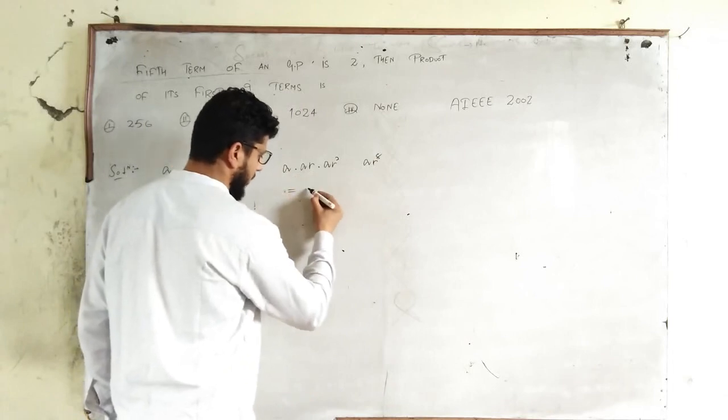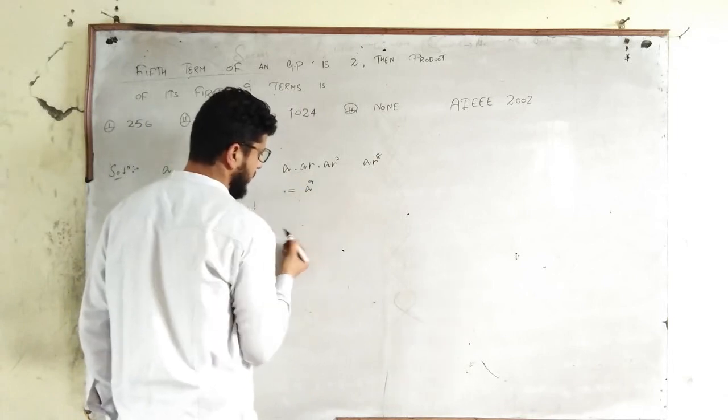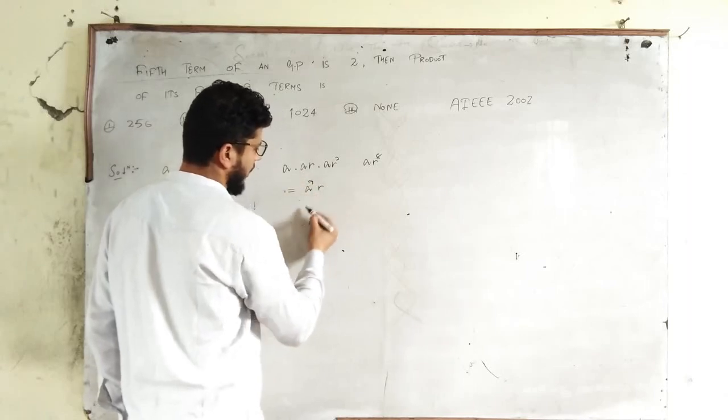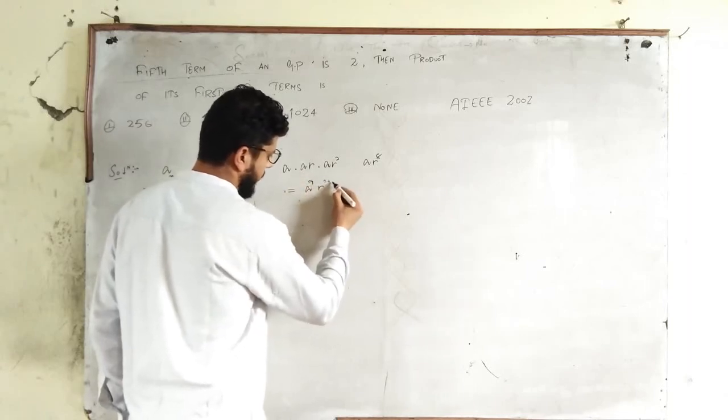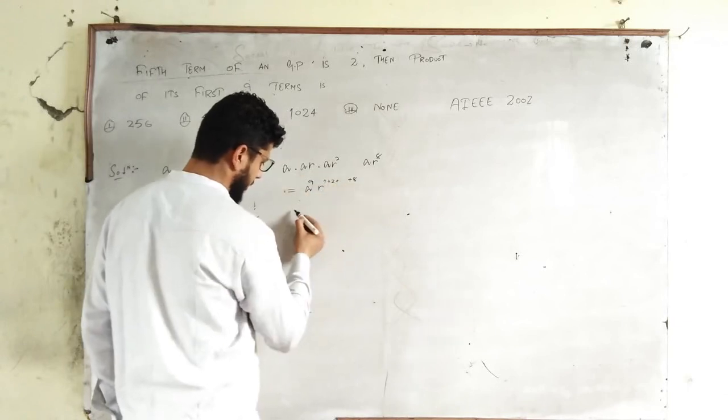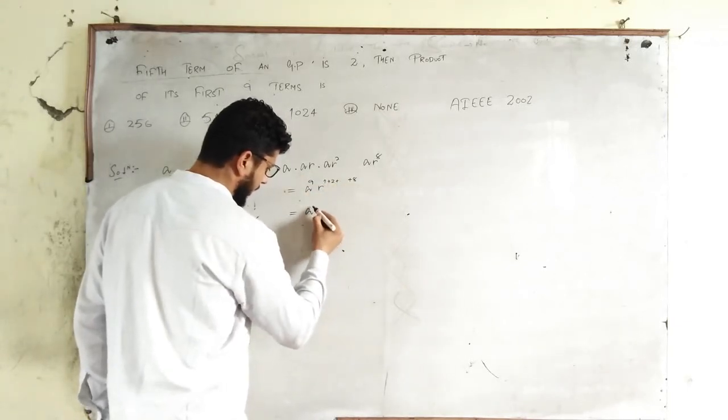This is how many times A? A appears nine times. And then you get R to the power of 1 plus 2 plus so on up to 8. So, A to the power 9.